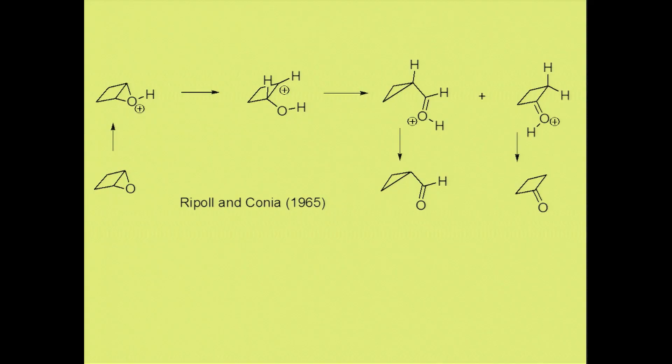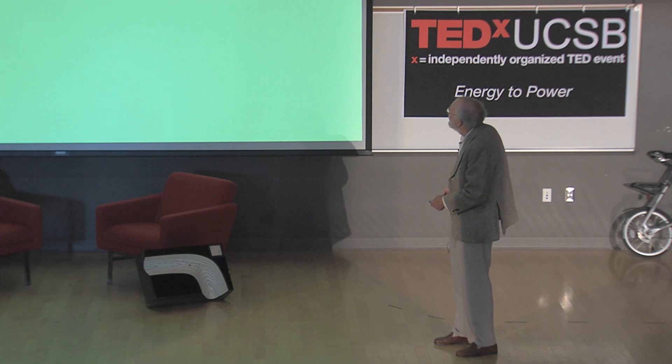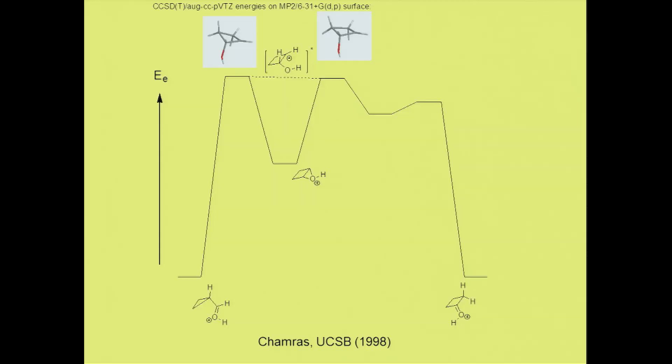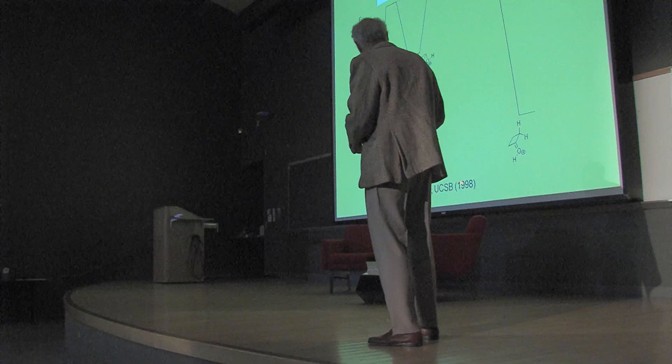Here is the first time this reaction is discussed. This is a reaction that Ripoll and Conia in France studied where you start with one of these three-membered ring oxygen compounds and get two different products: one with a three-membered ring carbon ring, the other with a four-membered ring carbon ring. When we did very good quantum calculations on that reaction, we found that the supposed intermediate actually occurred as a transition state, not as a valley. The two transition states are virtually identical in energy, so they branch and go to the two different products.